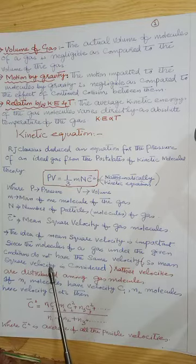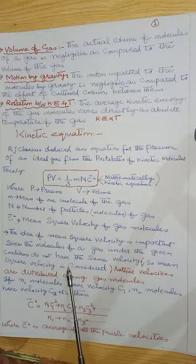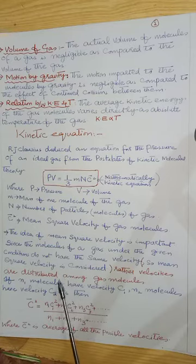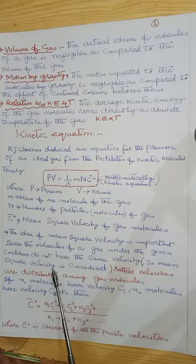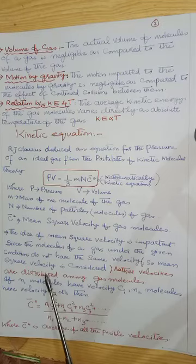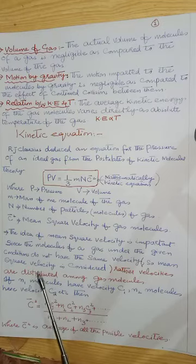The gas molecules are not all moving at equal velocities. Rather, velocities are distributed among gas molecules — this was Maxwell's law of distribution of velocity. The molecules have different velocities, which is why we use mean square velocity.